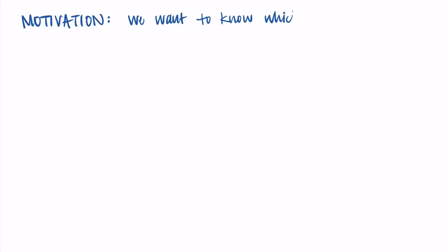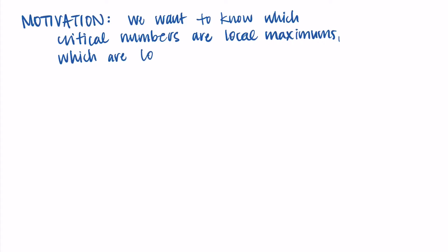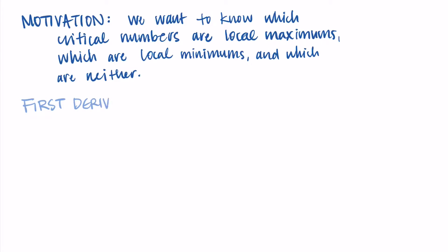In this video we're going to walk through the steps of the first derivative test. Our motivation is that we want to know which critical numbers are local maximums, which are local minimums, and which are neither. Critical numbers are possible values that correspond to maximums or minimums, and they occur when the derivative is zero or undefined. This process is called the first derivative test because it uses the first derivative to test the critical numbers.